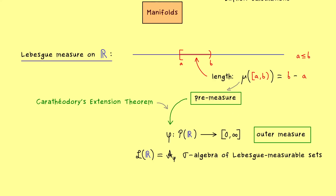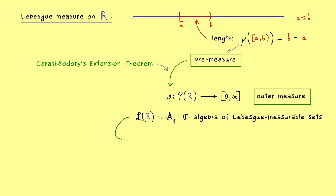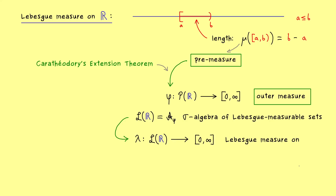Now I should tell you that this whole procedure with pre-measure and outer measure leads us to a proper measure in the end. Hence, what we get is what we call the Lebesgue measure, denoted by lambda. It is defined on the whole sigma algebra L(R). This is our one-dimensional Lebesgue measure, and it does exactly what we want — it generalizes the measurement of lengths of intervals.